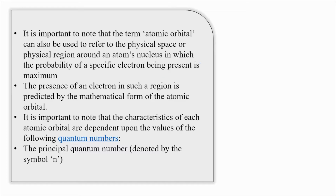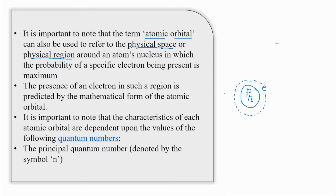It is important to note that the atomic orbital can be used to refer to a physical space or a physical region around the atom's nucleus. That means when I'm drawing a nucleus — we have a proton and a neutron, any number of protons and neutrons — and this part which is embedding the proton and neutron is the nucleus. Outside the nucleus, I'll have an electron and this particular electron is moving in a particular orbit. Let me draw a couple more electrons in the next orbit — two electrons. Both of these electrons are moving in one of the orbits, meaning the next orbit has two electrons.